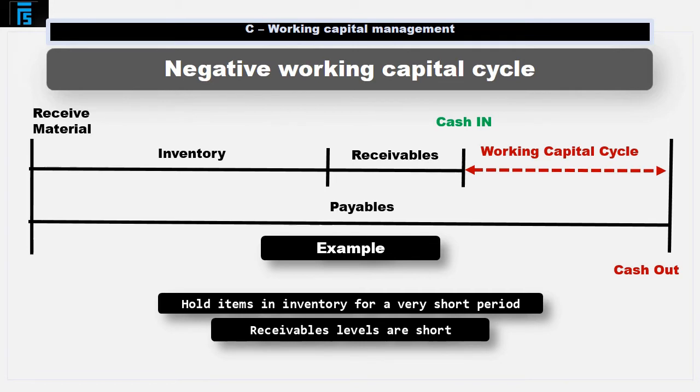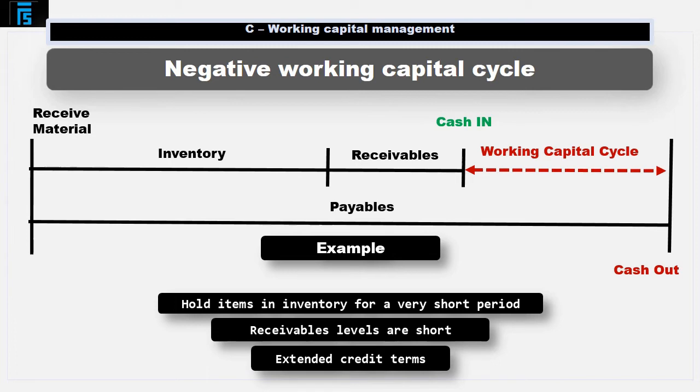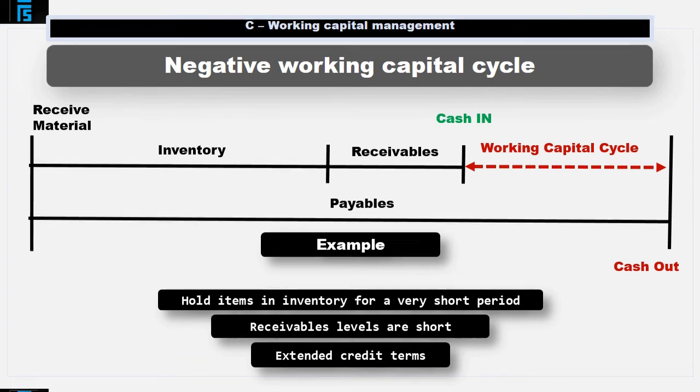They will sell items for cash so that receivable levels are also short. Even where credit cards are used, the vendor will usually receive cash from such transactions within a few days. Finally, supermarkets have the power to negotiate extended credit terms with its suppliers, resulting in long periods of payables. This situation is sometimes referred to as a negative working capital cycle.